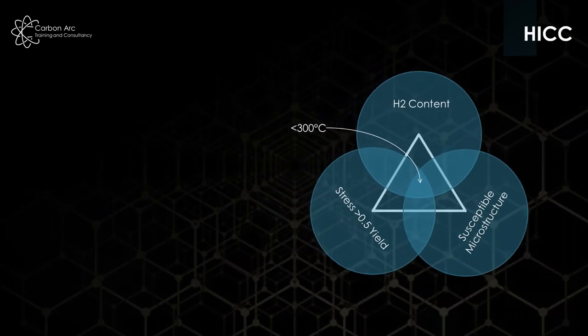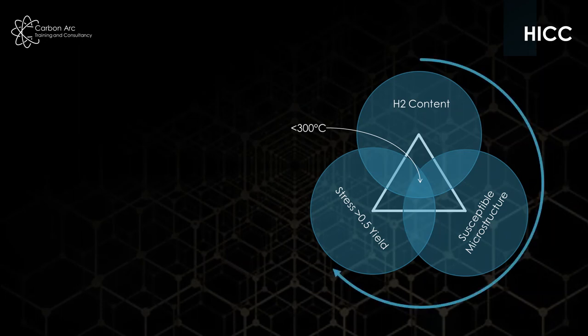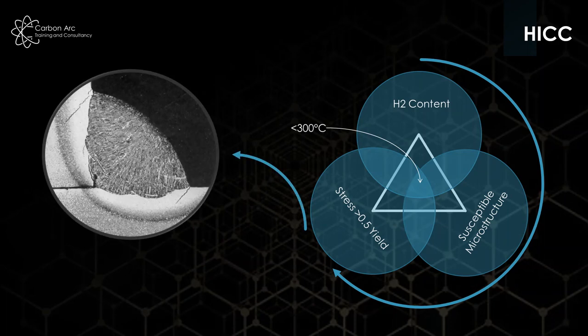That's our very quick overview of hydrogen-induced cold cracking, where we have a hydrogen content, a susceptible microstructure, and an applied stress. When we get those acting together in a material which has dropped beneath 300 degrees, we can drive hydrogen-induced cold cracking. That can normally be from the toes of the welds because that's where we have higher stress concentrations.